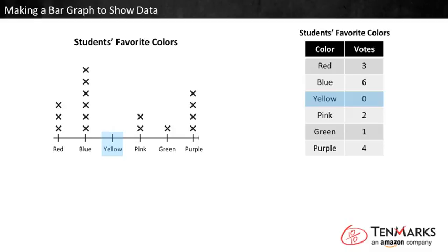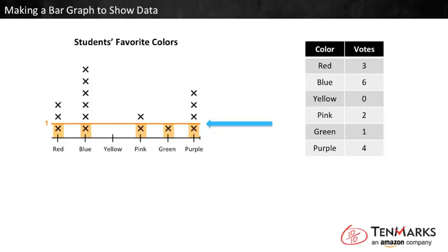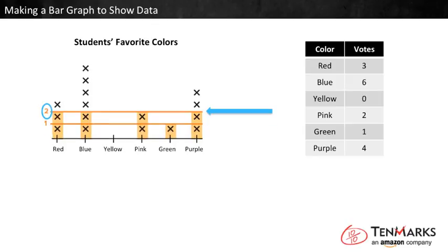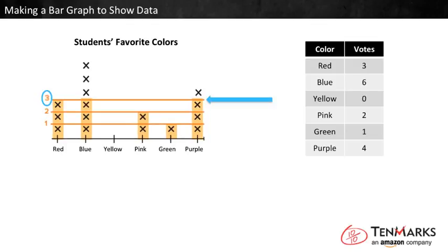Let's compare how tall these stacks of X's are. All of these stacks have at least one X, which means they all got at least one vote. Since the X's are all the same size, we can say that all the stacks that come up to the one line had at least one vote. All these stacks have at least two votes — they all come up to the two line.